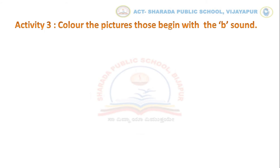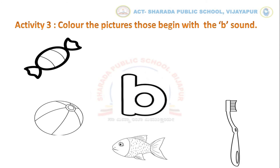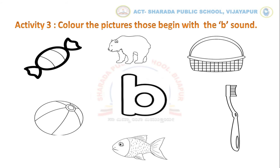Now let us do activity number 3. Color the pictures that begin with the B sound. Children, can you identify these pictures? Yes kids — chocolate, bear, basket, brush, fish, and ball. Now tell me kids, which are the pictures that begin with the B sound here? Yes children — bear, basket, brush, and ball.